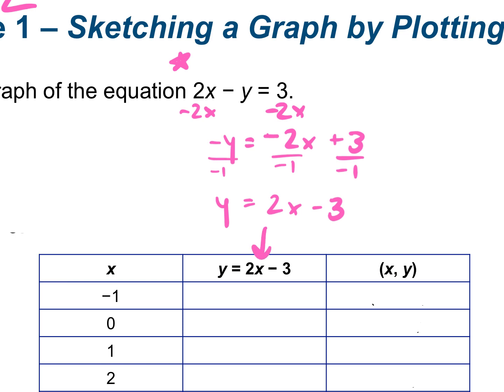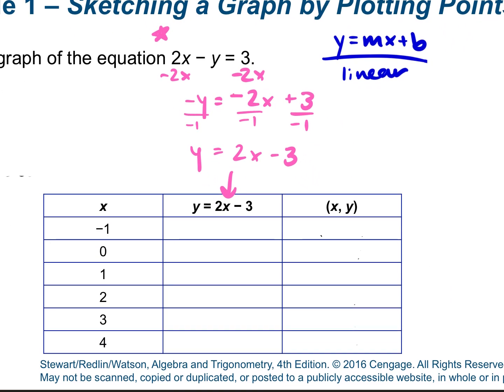Do we know what type of graph we're going to have? We have y equals 2x minus 3. What shape is this graph going to have? This equation is in the form y equals mx plus b. It is a linear graph — our graph is going to be a straight line. So just for the sake of time, I'm only going to plug in some of these numbers. I'm plugging in these numbers for x, finding the y, and that gives me the point (x, y).